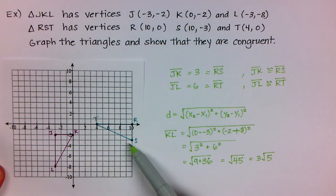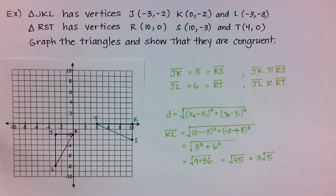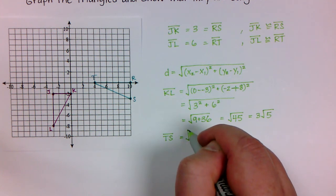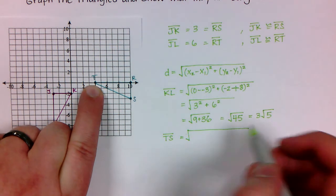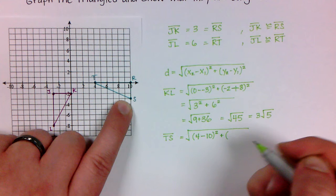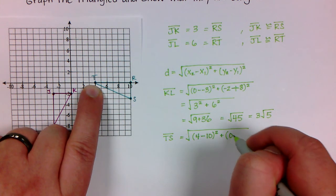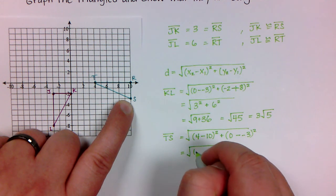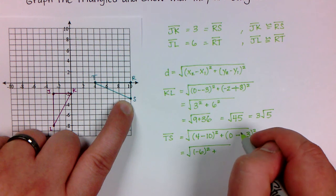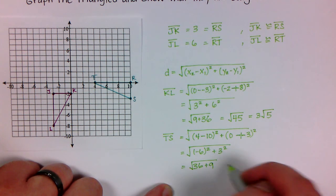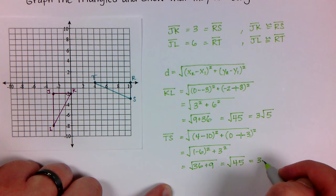Now if I find the length from T to S and it's the same, then these sides are congruent. For side TS: T has x-value 4 and S has x-value 10, so (4 − 10)² = (−6)² = 36. T has y-value 0 and S has y-value −3, so (0 − (−3))² = 3² = 9. That gives square root of 45, which is also 3√5.